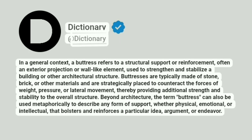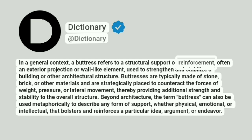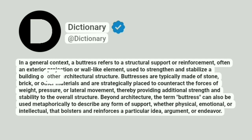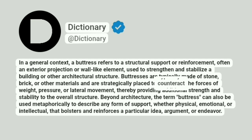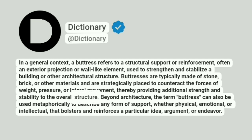Dictionary. In a general context, a buttress refers to a structural support or reinforcement, often an exterior projection or wall-like element, used to strengthen and stabilize a building or other architectural structure. Buttresses are typically made of stone, brick, or other materials and are strategically placed to counteract the forces of weight, pressure, or lateral movement, thereby providing additional strength and stability to the overall structure.